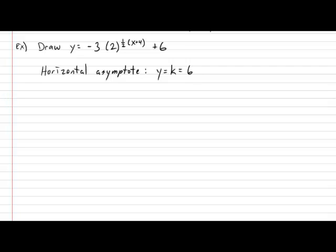Next, let's calculate the zero if it exists. So, to calculate the zero, what we need to do is set the value of y to zero and solve for x. And our expression is -3(2)^(1/2(x+4)) + 6. Alright, so using your regular algebra skills, let's begin by moving the +6 over to the other side of the equal sign. That gives us -6 = -3(2)^(1/2(x+4)).